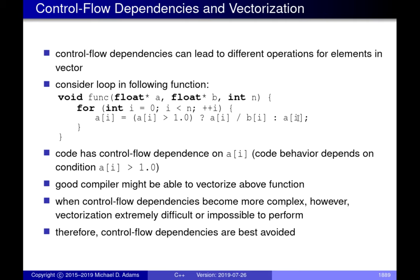A good compiler might be able to vectorize the code given here because there aren't too many control flow dependencies, but it gets tricky very quickly. It's generally advisable not to have any control flow dependencies at all in a loop if you want to vectorize it. If you do need such dependencies, try to minimize them, because the compiler will quickly reach a point where it won't be able to vectorize your code.